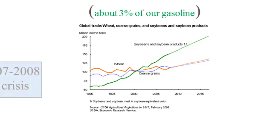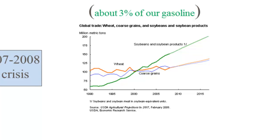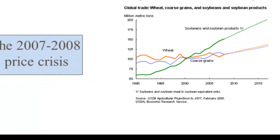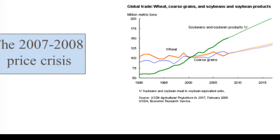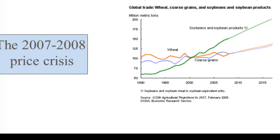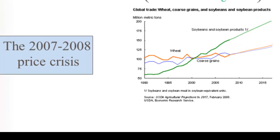There was a crisis in grain prices in 2007–2008 which affected the prices of rice, wheat, and corn on the world market. For people living very close to the subsistence level, it put the grains that were basic to their diet beyond their reach.